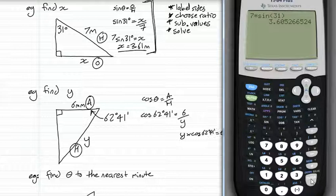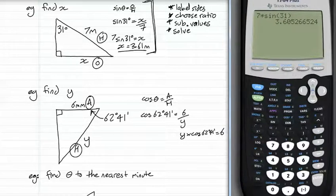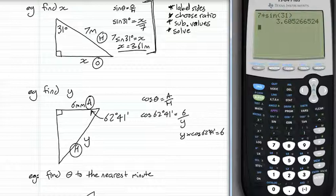Now you don't really need that line. Because you can jump straight to realizing, well if I need to get y on its own, I need to divide by cos 62 degrees 41 minutes on both sides. Which means you've got y equals 6 over cos 62 degrees 41 minutes.